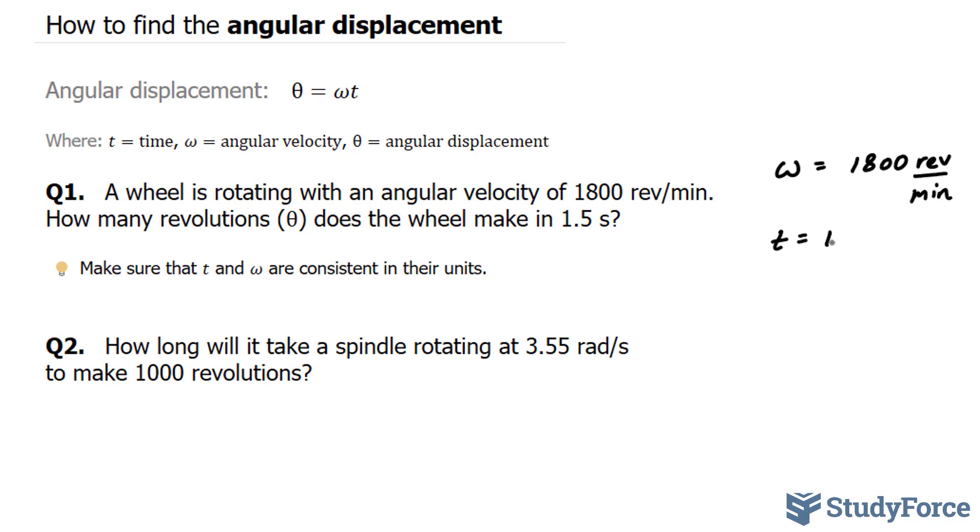Now you'll notice something right from the start that your angular velocity is in terms of minutes and your time is in terms of seconds. They have to both be consistent. So let's convert 1800 revolutions per minute into seconds. That's easy to do.